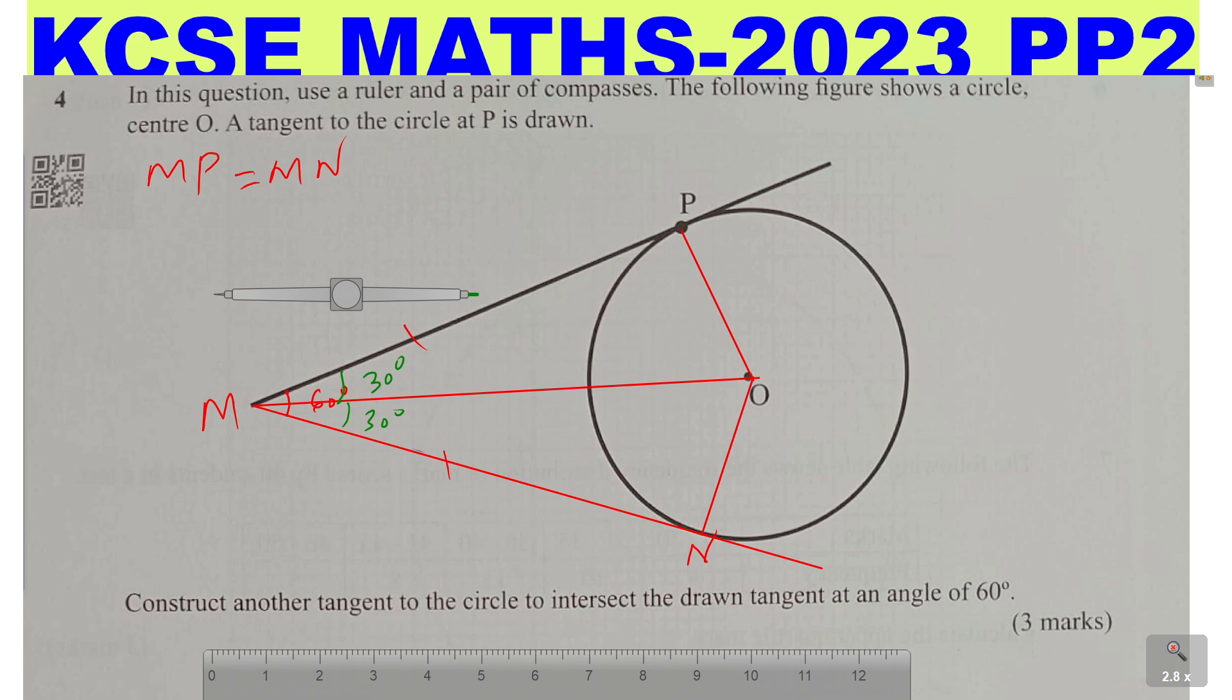Another important property that is going to help you is the tangent radius property. Remember, the tangent is perpendicular to the radius. So this angle here is 90 degrees. And this one is also 90 degrees.